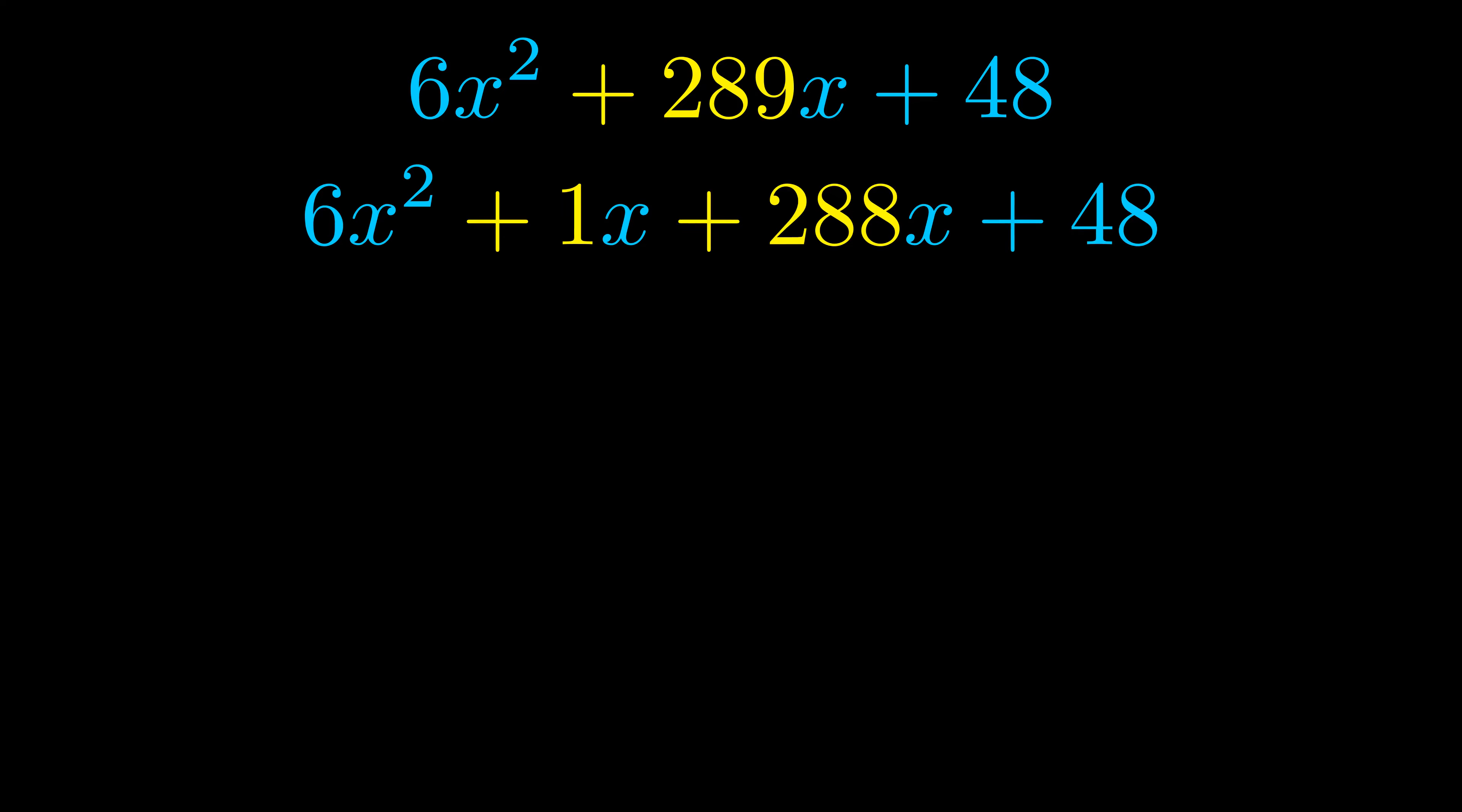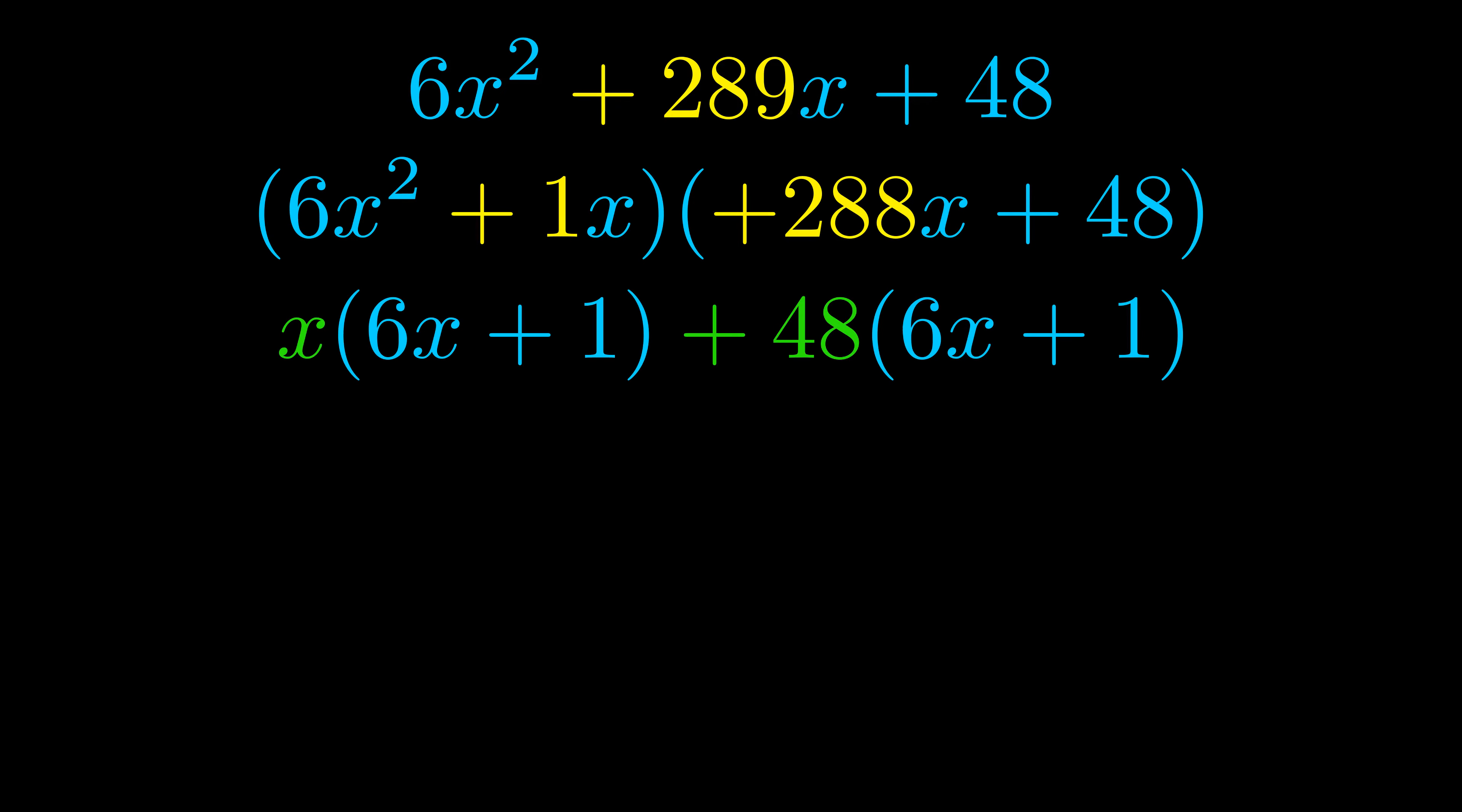Once we've done this, we go ahead and put parentheses around the first term and the last term, and we do that so that we can take the greatest common factor out of both terms. We can see the greatest common factor is now outside in green. Notice also how what remains inside of the parentheses is the same in both cases. The blue values are the same.